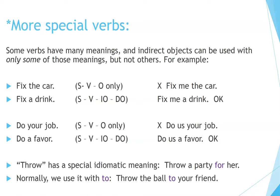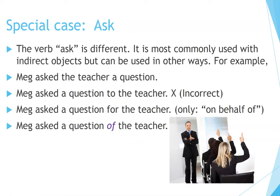The verb 'throw' has a special idiomatic meaning: 'Throw a party for her.' Normally we use it with 'to': 'Throw the ball to your friend.' Special case: 'ask.' The verb 'ask' is different — most commonly used with indirect objects but can be used in other ways. For example: 'Meg asked the teacher a question.' Not 'Meg asked a question to the teacher.' 'Meg asked a question for the teacher' only means on behalf of. 'Meg asked a question of the teacher' is also okay.